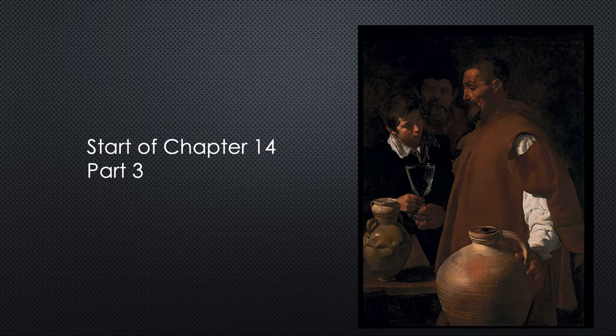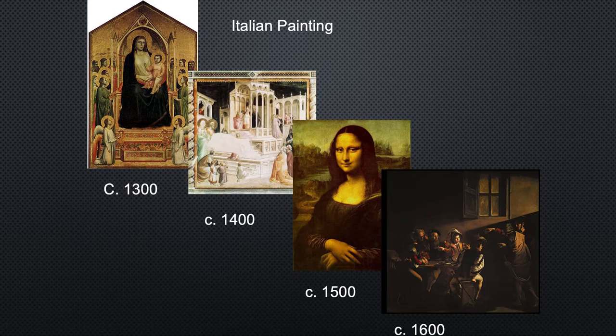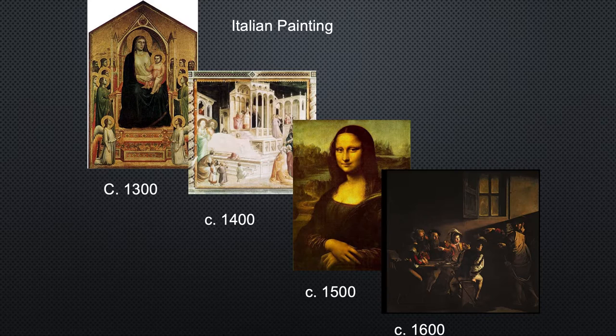This is part three of chapter 14 — a review of where we've come from. Since 1300, when we started with Giotto beginning to break out of the Byzantine style of frozen figures, then 1500 with Leonardo da Vinci, and by 1600 we've got Caravaggio, introducing by contrast an extremely naturalistic style of painting where figures looked so real.